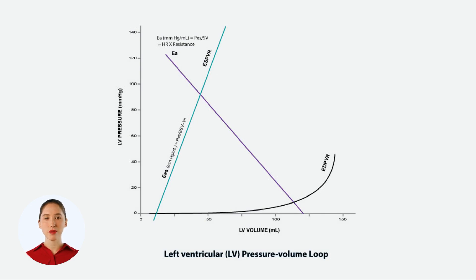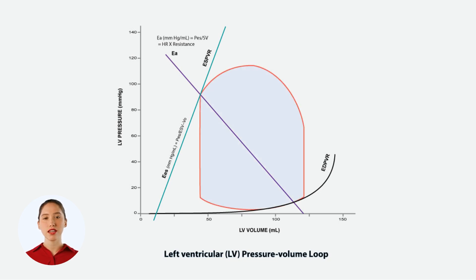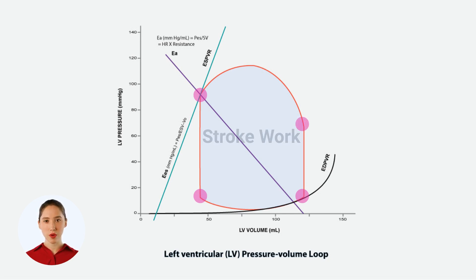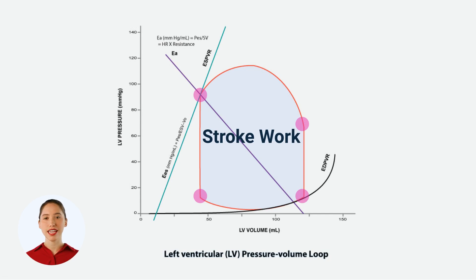With these lines in place, we can make educated guesses about the shape of the pressure volume loop. The loop will come down from the ESPVR line, follow the EDPVR curve, and rise back up during ejection, forming a loop. The area inside this loop represents the stroke work — the work done by the heart during each cardiac cycle. A larger loop indicates more work, and a smaller loop indicates less work.